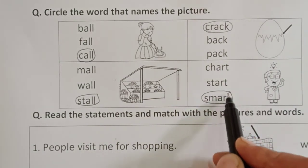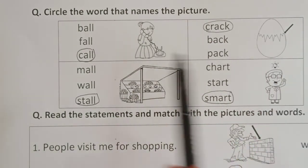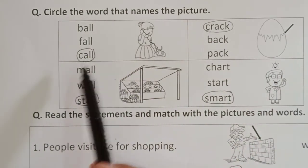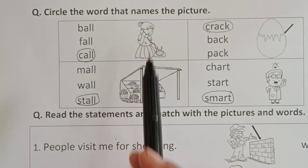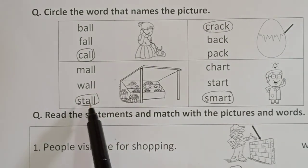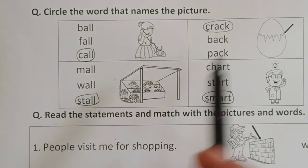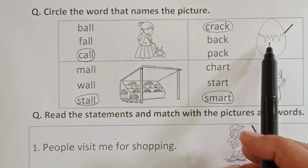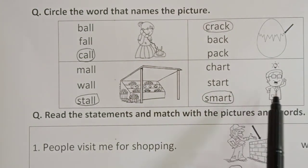Circle the word according to the picture. I am reading again. Call — the girl is calling. Stall — this is a picture of a stall. Crack — the egg has a crack. Smart — the boy is very smart.